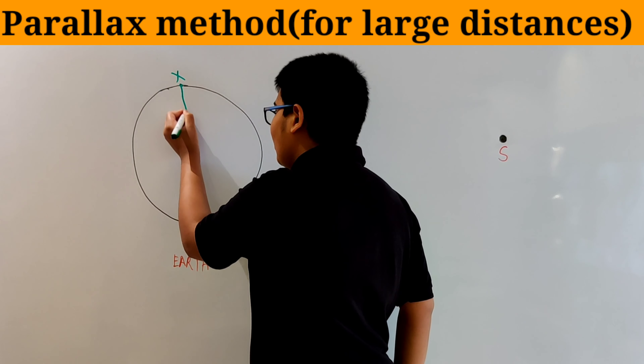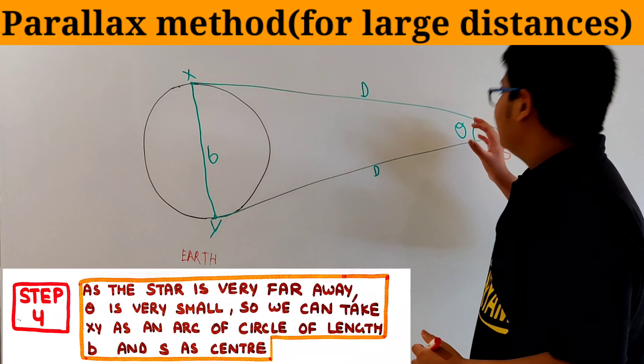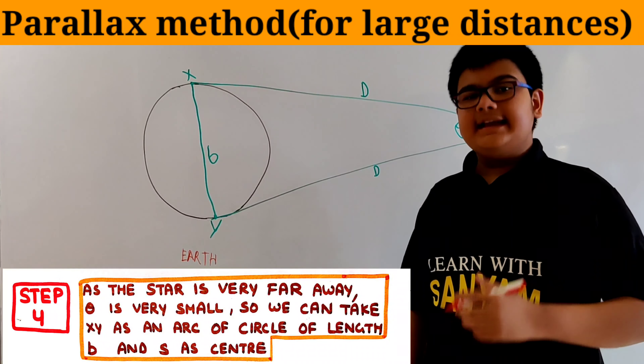Point S is the star. When we observe the star from both X and Y using telescopes, those are the lines of sight. The distances XS and YS are equal to D, the distance between the earth and the star, which is what we have to find. In step 3, we take the angle XSY to be theta. We can calculate this angle theta using telescopes and other instruments. This angle theta is also known as the parallax angle.